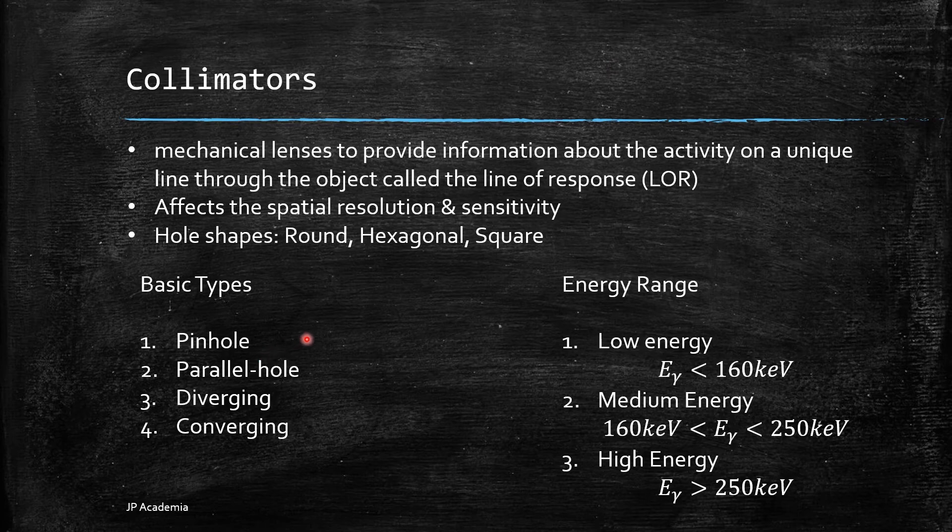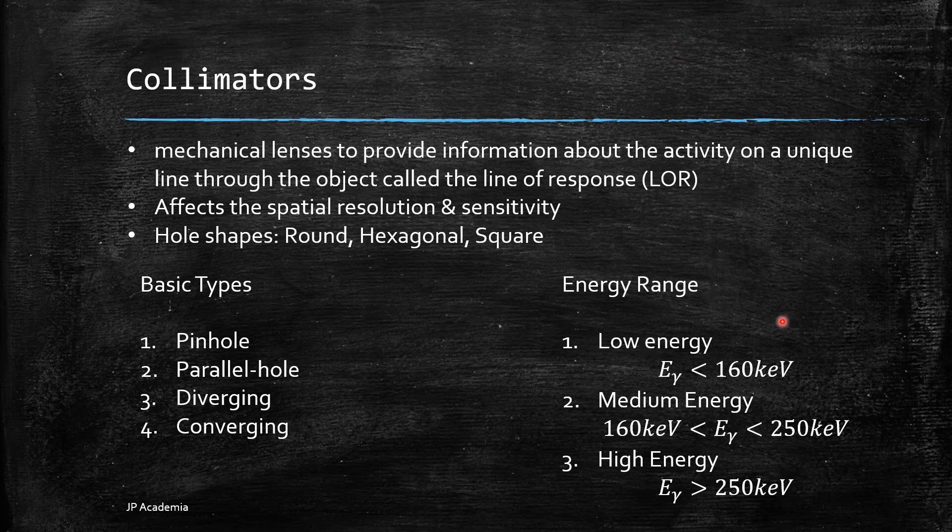We have pinhole, parallel, diverging, and converging. Collimators according to energy range can be classified into three: low energy E_γ < 160keV, medium energy 160keV < E_γ < 250keV, and high energy E_γ > 250keV. Energy range should take into account high energy photons even if not included in the image.